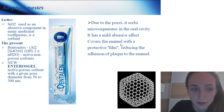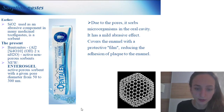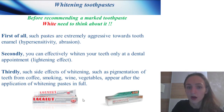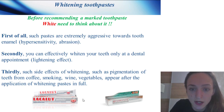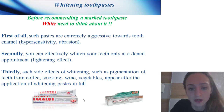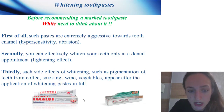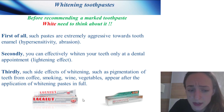Salt toothpastes: Blendamed, Colgate Natural, tea tree oil, pearls with table salt, and others. Sorption pastes: Early the Presence New. Whitening toothpastes: before recommending a whitening toothpaste, think carefully — such pastes are extremely aggressive towards tooth enamel; secondly, you can only effectively whiten teeth at a dental appointment; and thirdly, side effects such as pigmentation from coffee, smoking, wine, and vegetables appear after application of whitening pastes in full.